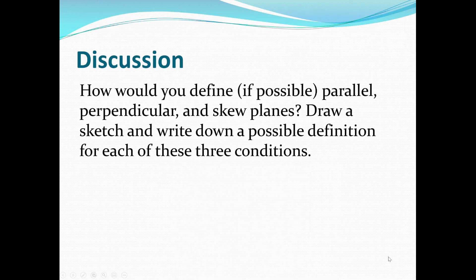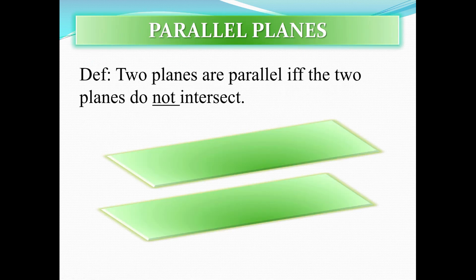The question is: how would you define, if possible, parallel, perpendicular, and skew planes? Draw a sketch and write down a possible definition for each. For parallel planes: two planes are parallel if and only if the two planes do not intersect. We don't use the term coplanar because these are planes and they cannot be coplanar — they're parallel in space. We don't write 'in space' explicitly because we're working in Euclidean geometry, which already assumes a three-dimensional space.